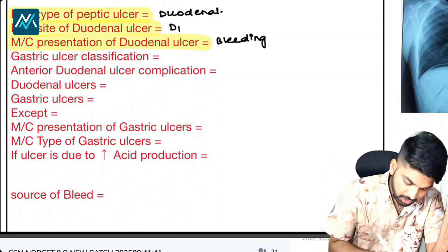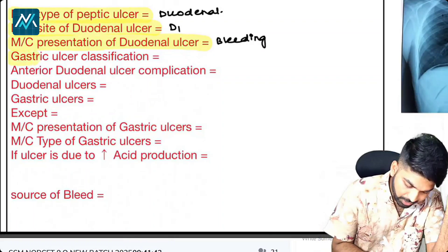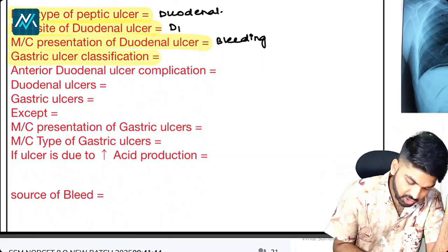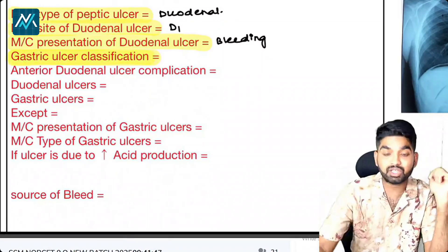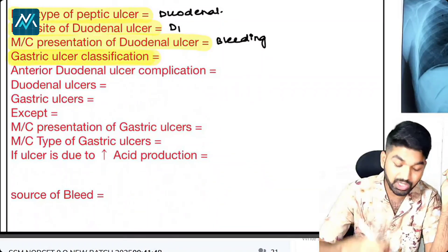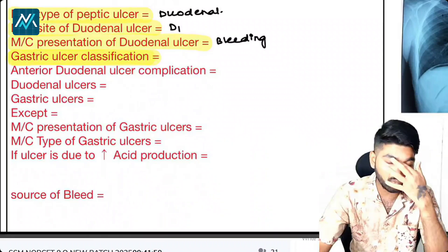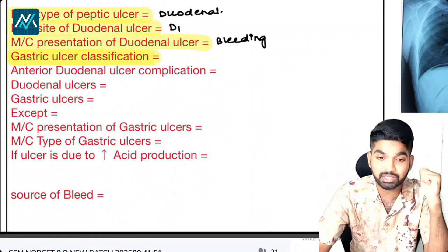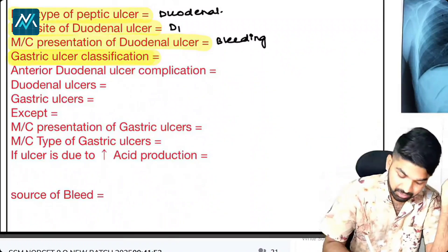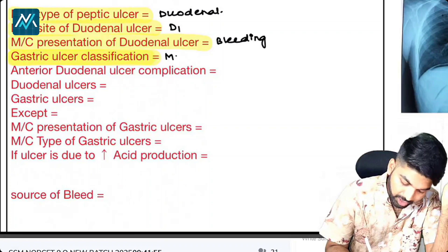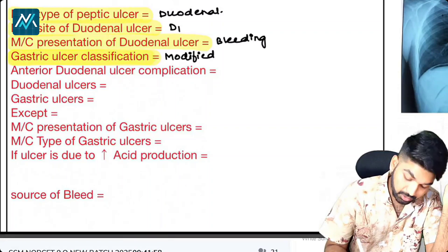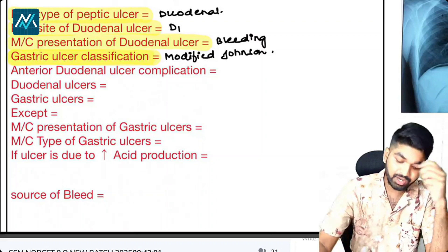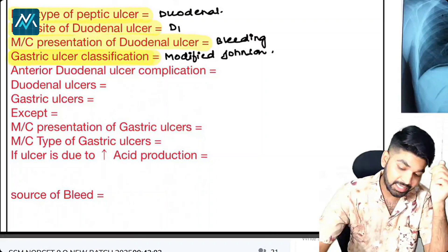Now, gastric ulcer classification — there is a special classification I told you about. What is the name of that? Excellent, Bhavani — it is the modified Johnson classification.